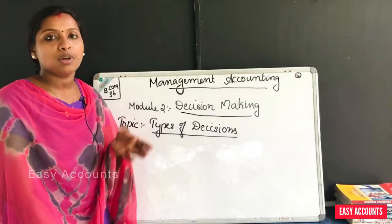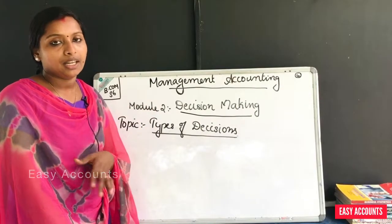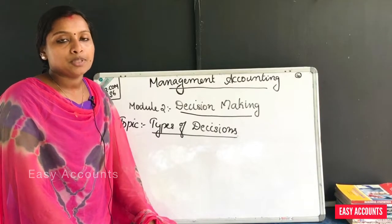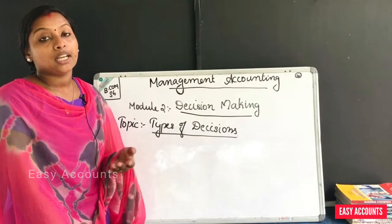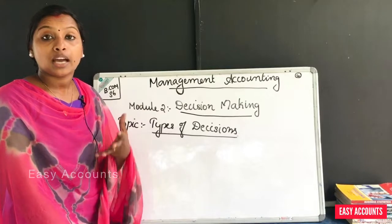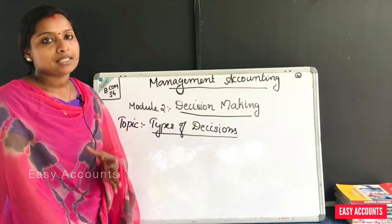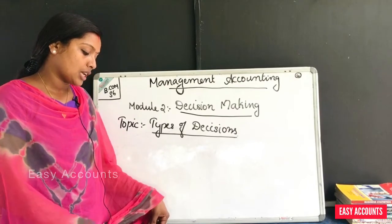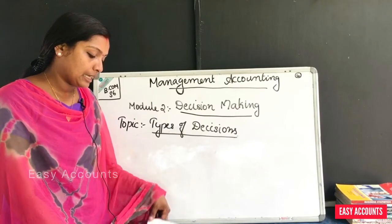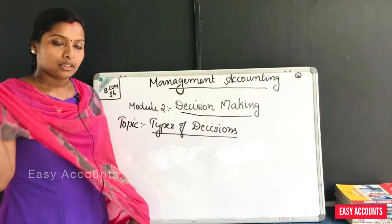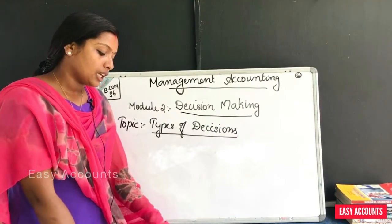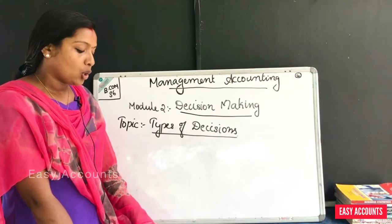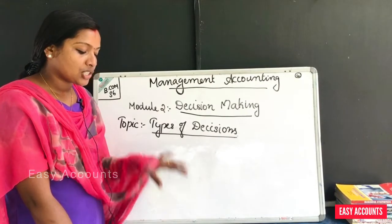What we are going to do is look at the types of decisions. In the decision-making module, how many types do we have? We have 10 things. First: programmed and non-programmed decisions.